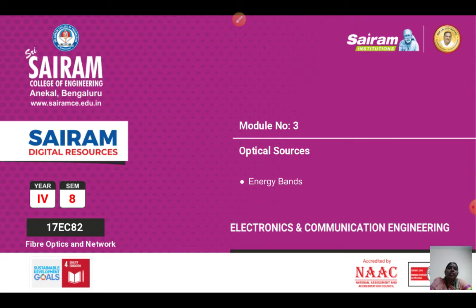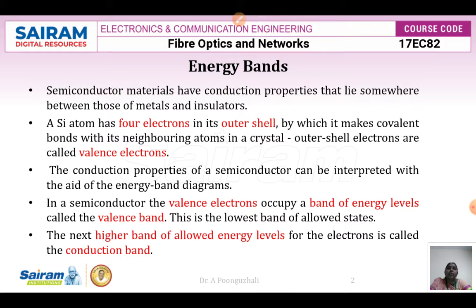First we will see about energy band. A semiconductor material has conduction properties that lie somewhere between those of metals and insulators. Silicon has four electrons in its outer shell, which make covalent bonds with neighboring atoms in a crystal. These outer shell electrons are called valence electrons. The conduction properties of semiconductors can be interpreted with the help of energy band diagrams. In a semiconductor, the valence electrons occupy a band of energy levels called the valence band, which is the lowest allowable band of allowed states.